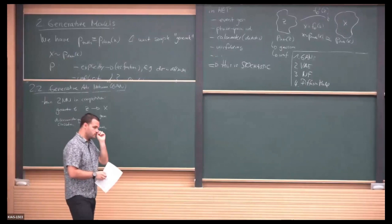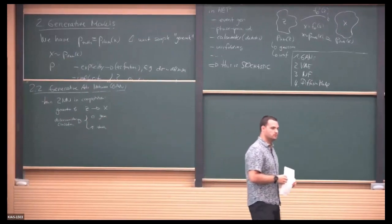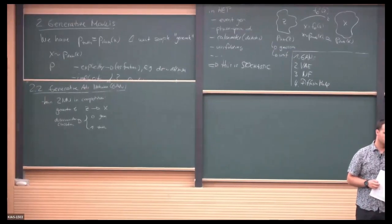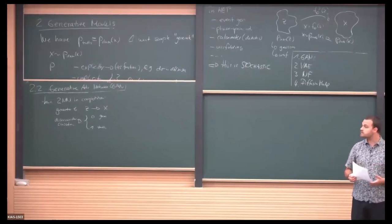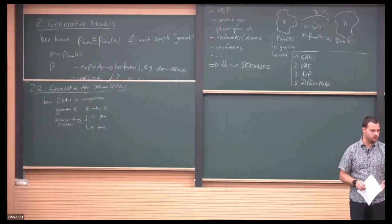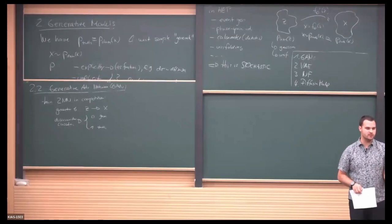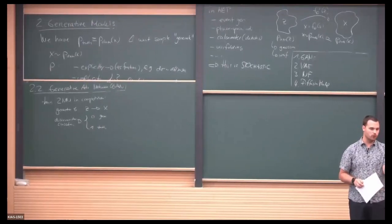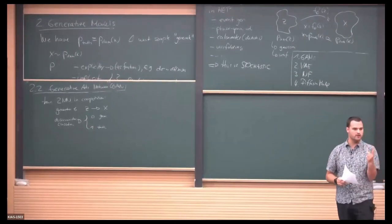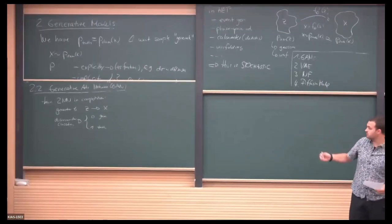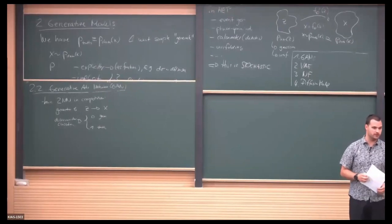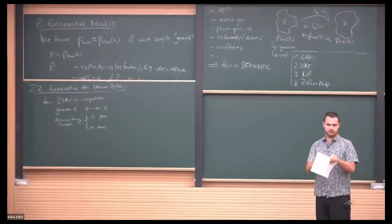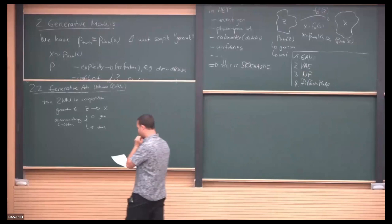The discriminator tries to assign class zero to generated data and class one to truth data. So you're essentially using the classifier metric I just described to train the generative model. The discriminator is free to take any input features — not just a 1D observable, but the full high-dimensional feature vector. You can also have multiple discriminators, or one discriminator receiving high-dimensional input. This is exactly what I described for quantifying model quality: using the classifier metric to train the generative model.